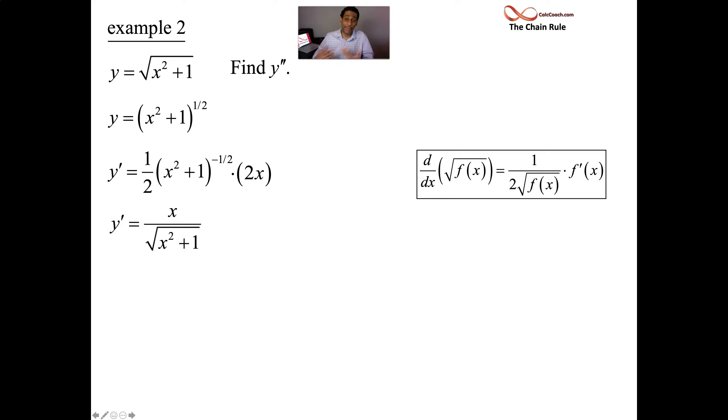We can simplify this because we need to take a second derivative. The 2s cancel out. Put the root on the bottom, and we'll have x on top with x squared plus 1 underneath the root. Great — we're ready for the second derivative, the derivative of the derivative. We'll find out later why this is important.